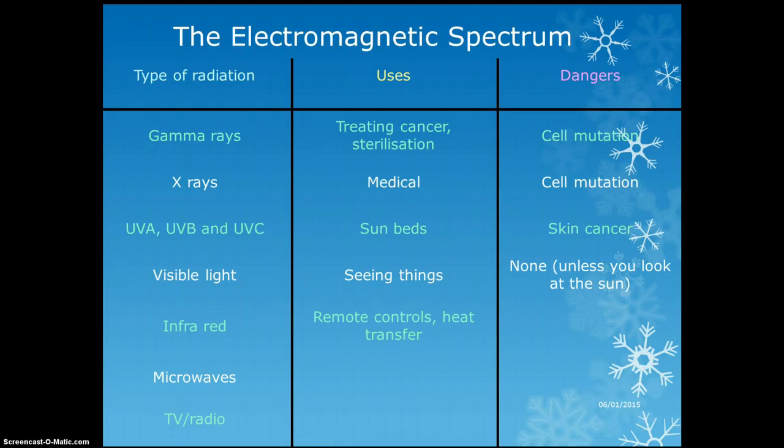Infrared radiation is used for remote controls and for transferring heat. When we looked at thermograms, they measure infrared radiation, which is basically heat being transferred. It's infrared from the sun that keeps us warm. Dangers include sunburn and burns generally.